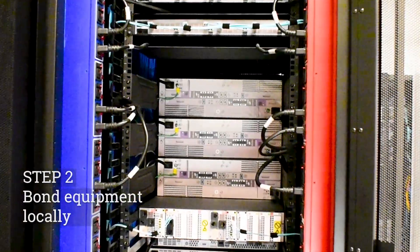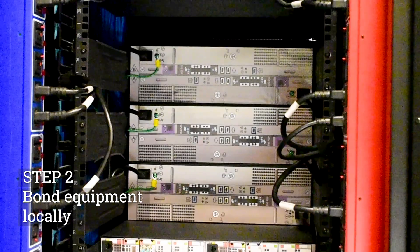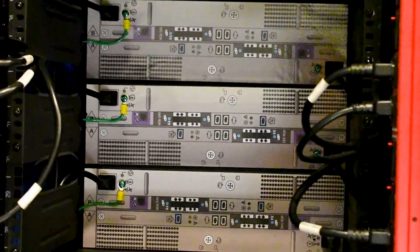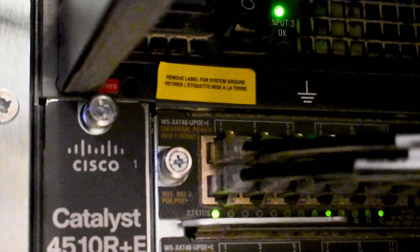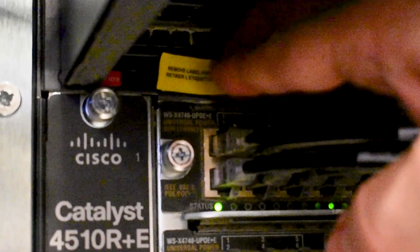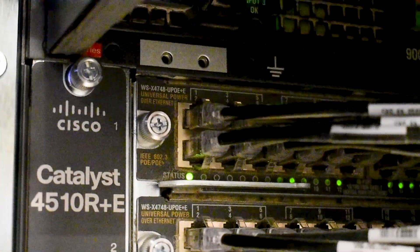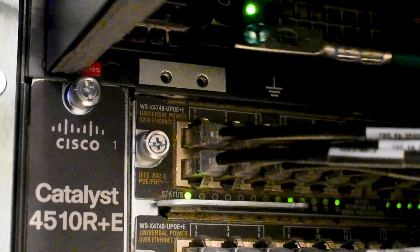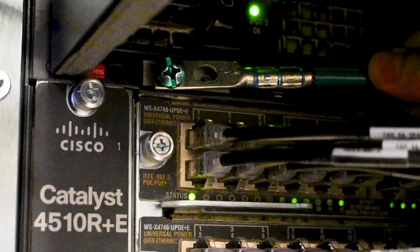Step two is to bond your equipment locally to the cabinet or rack. This should always be done per the manufacturer's instructions, but TIA requires this to be done in a visually verifiable manner. It is easiest to use a green insulated jumper and connect the equipment to a metallic rail strip or horizontal bus bar.